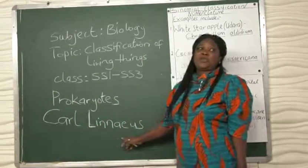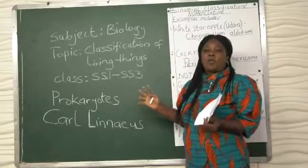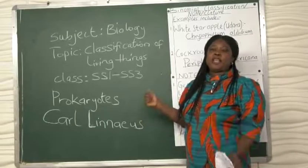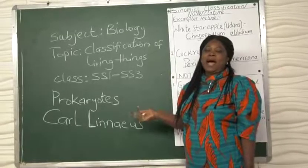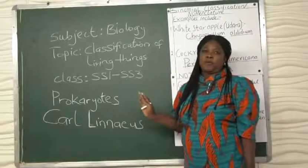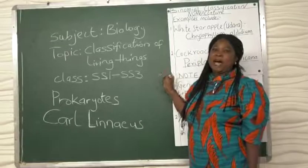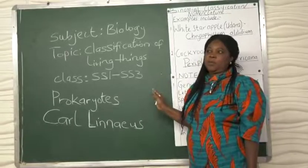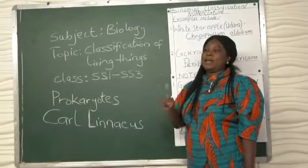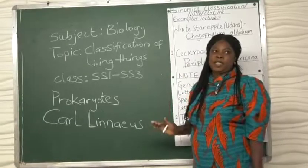Carl Linnaeus introduced the double system of naming organisms. And it was accepted by the scientists all over the world because it removed confusion. That means using the genus and the species name. Once you mention that it is a particular organism you have mentioned.